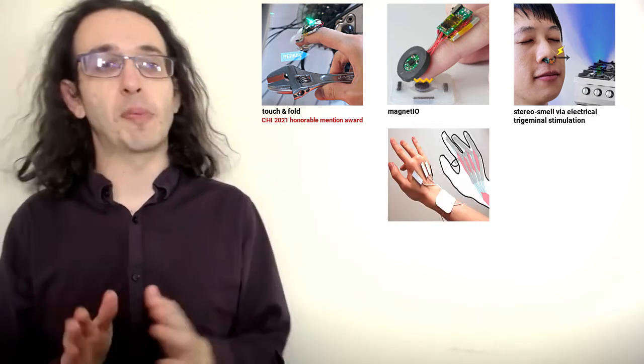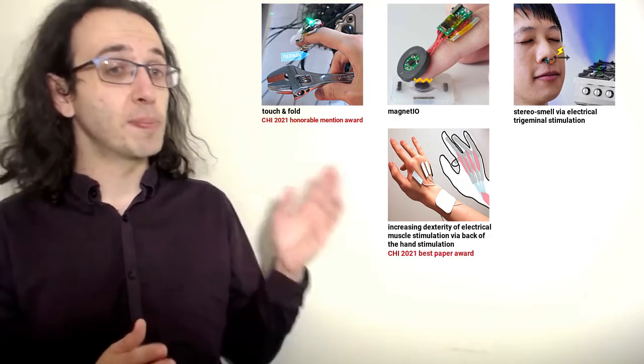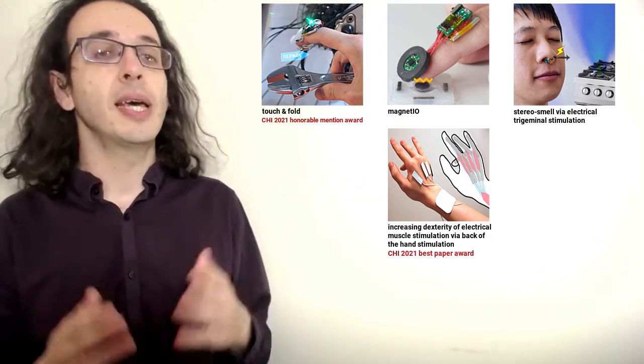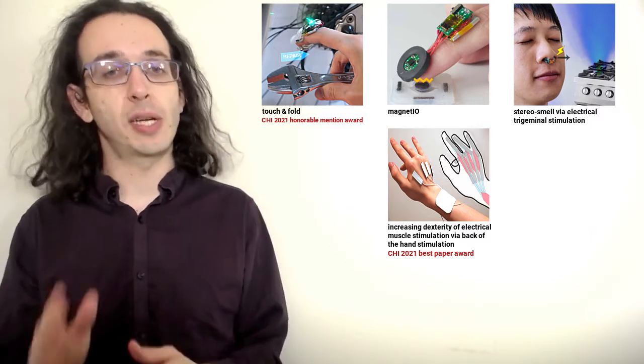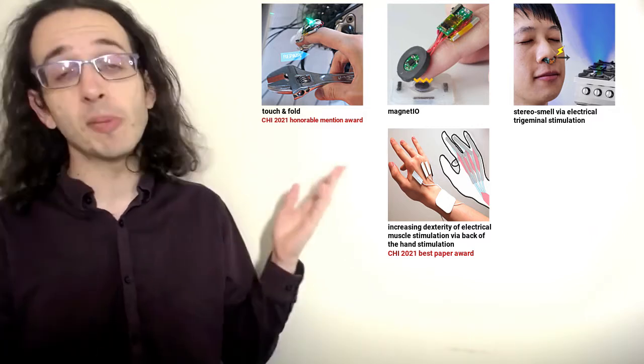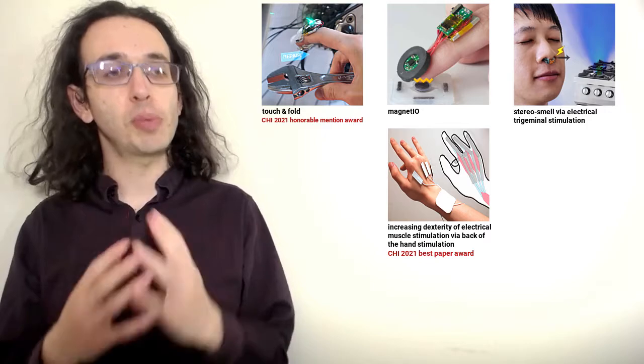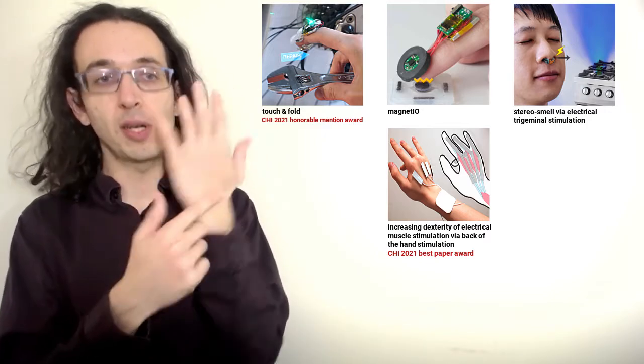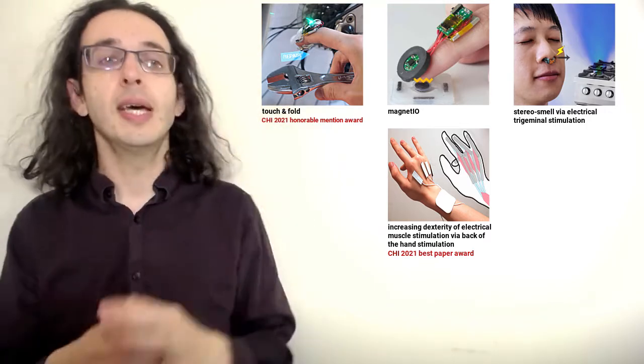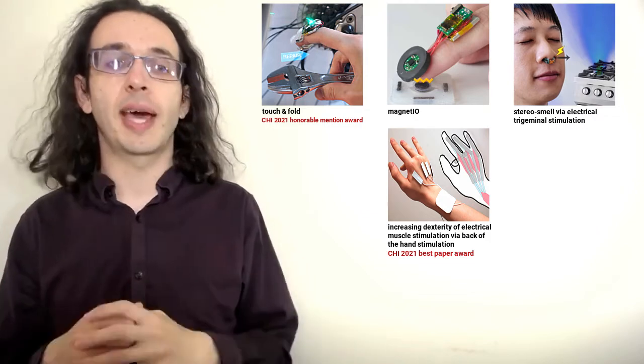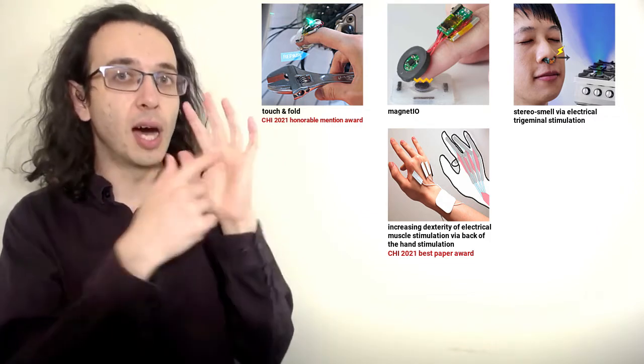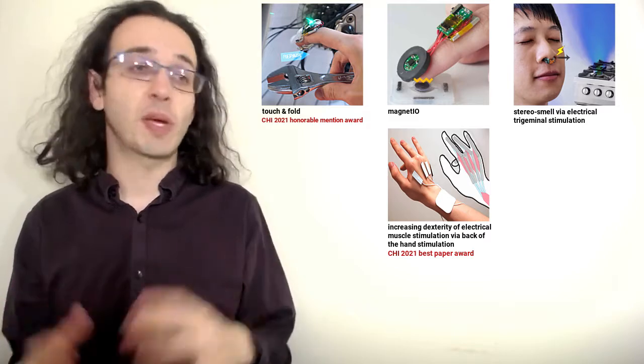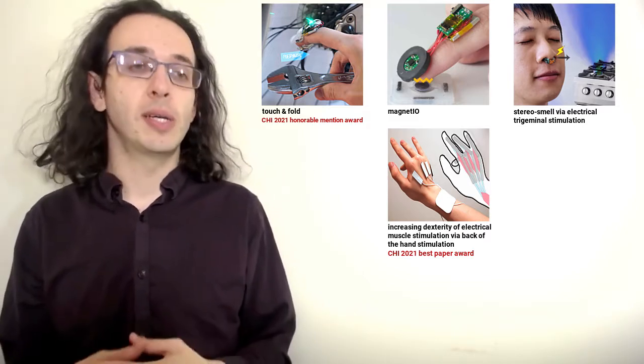The fourth paper is presented by my visiting PhD student Akifumi Takahashi and is called Back of the Hand Electrical Muscle Stimulation in which we demonstrate a novel electrode placement in the back of the hand rather than the forearm location that provides unprecedented accuracy to electrical muscle stimulation of the finger flexors. This paper has received a best paper award.